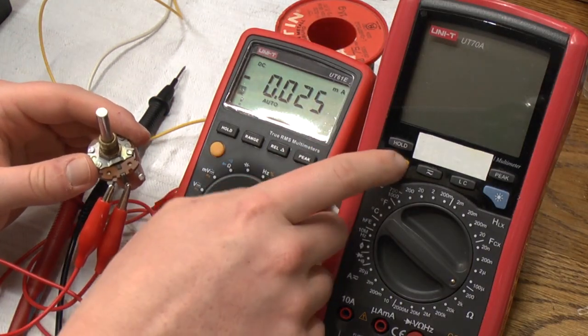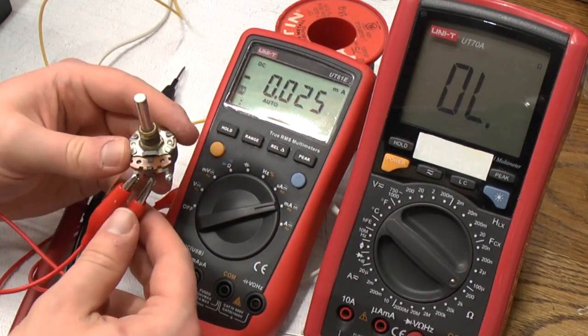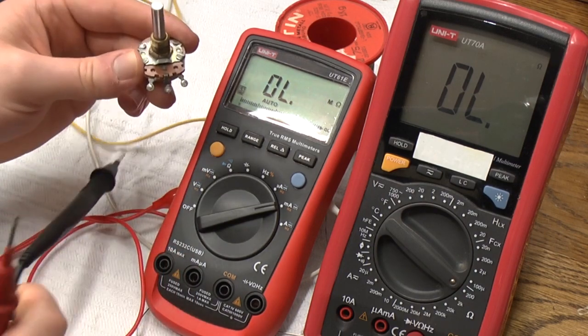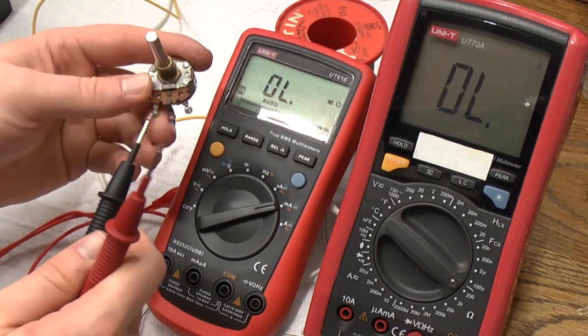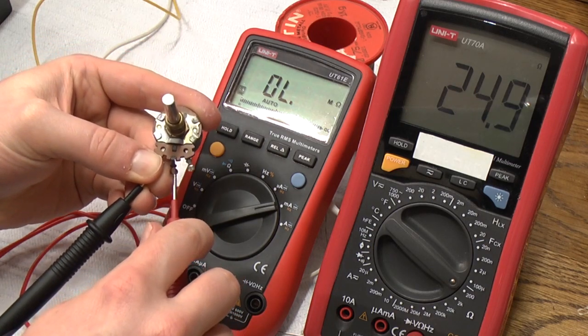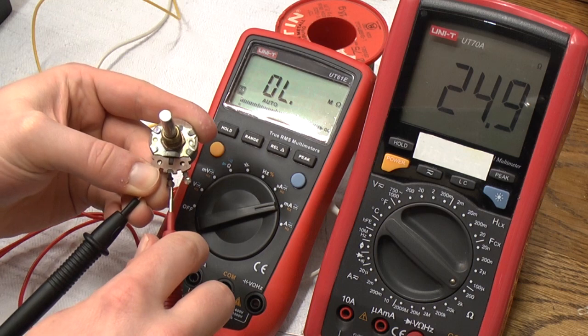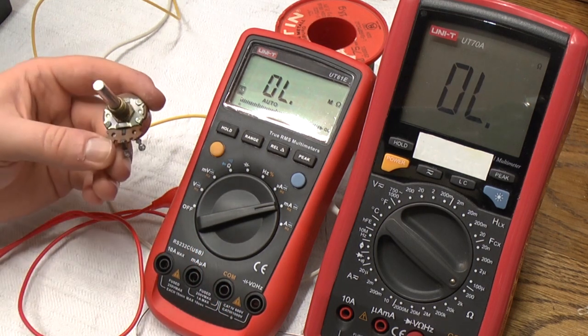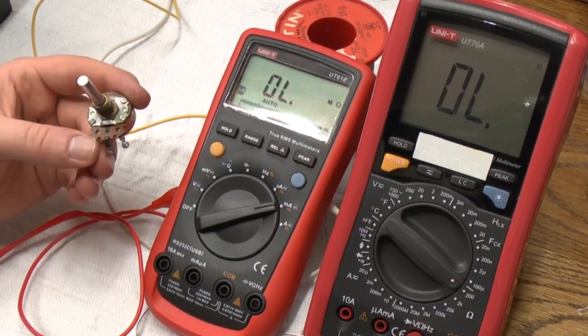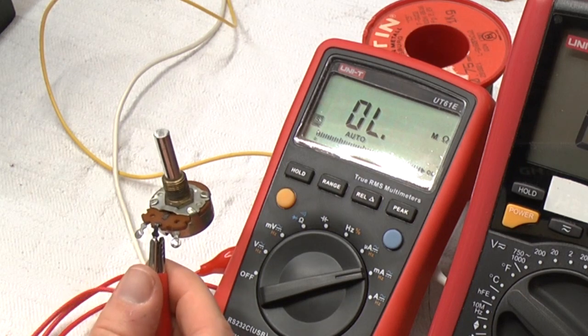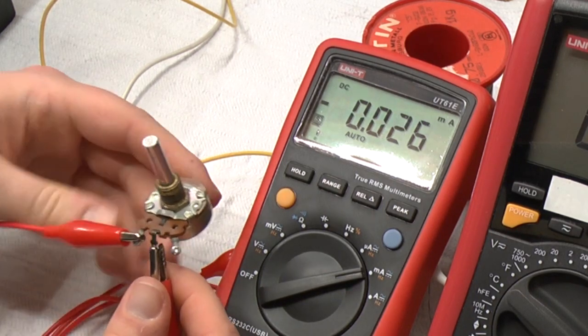Now, we're going to measure the value of the potentiometer, and it's going to be low, I tell you that. Get ready. 24 ohms. So, that is a very low value, certainly not the kind of thing that you'd expect,